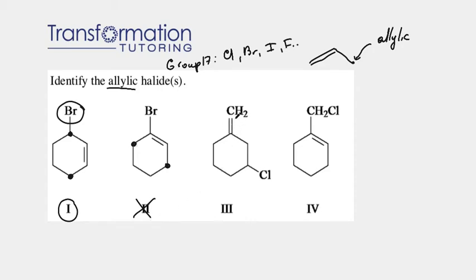Here, I have a double bond here. My allylic position, again, next to the double bond, this carbon and this carbon. Do they have any halogens on them? No. So this cannot be an answer.